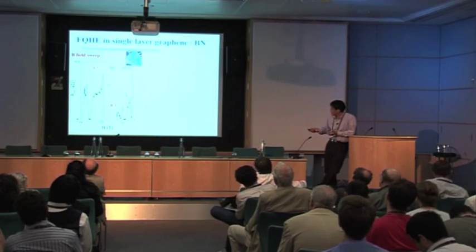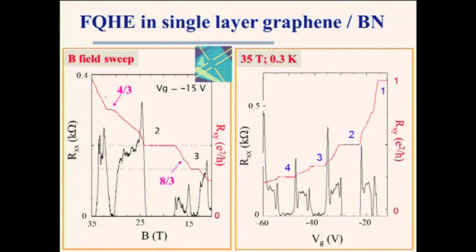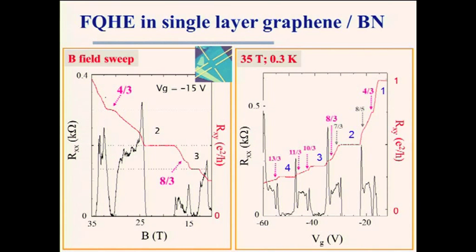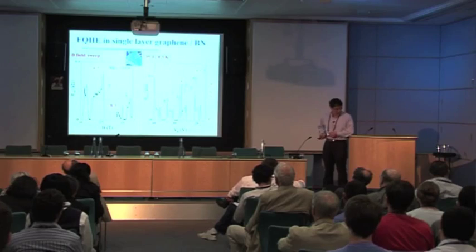Fixing at 35 tesla and sweeping gate voltage, we see the broken-symmetry integer states ν=1, 2, 3, 4, and in between, many blips corresponding to fractions. We can assign 4/3, 8/3 — very strong — and 10/3, 11/3, 13/3. If bold enough, one can also assign 8/5 and 7/3. This zoo of fractions is known in GaAs, which supports more than ten fractional quantum Hall states, so it is expected as sample quality improves.